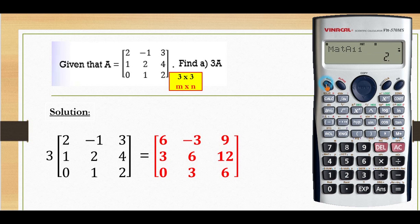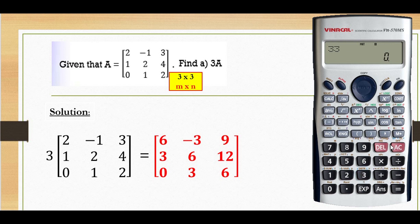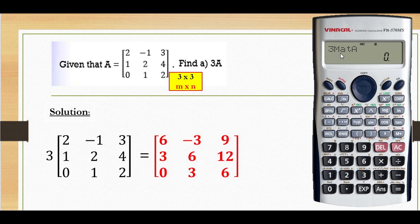Okay, after that I will press shift 4. Then I press 3. After that, shift 4, number 3 — for me to call out matrix A. So, 3 times matrix A. You will get: